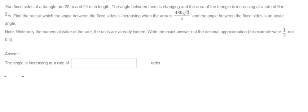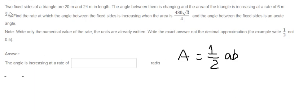The formula for the area of the triangle is A equals one-half times a times b times sine of alpha, where a and b are the two fixed sides and alpha is the angle between them. Now if we differentiate both sides with respect to time: